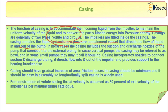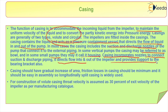In most cases, the casing includes the suction and discharge nozzle of the pump that connect it to the external pipe. In some vertical pumps, the casing may be referred to as a valve, and in some small pumps, they may be called as housing. The casing incorporates nozzles to connect the suction and discharge pipe, directs flow into and out of the impeller, and provides support to the bearing bracket also.